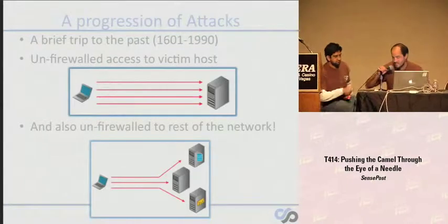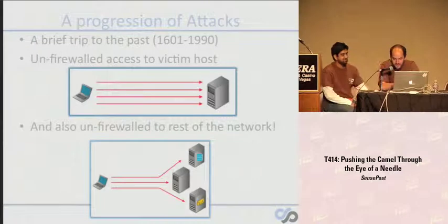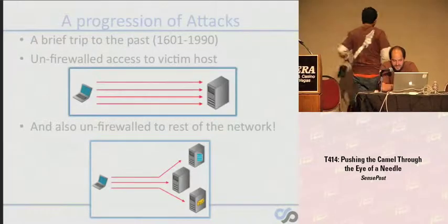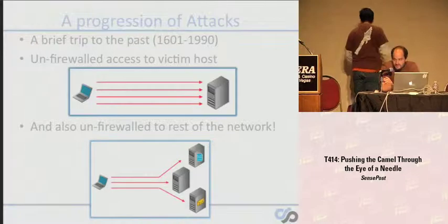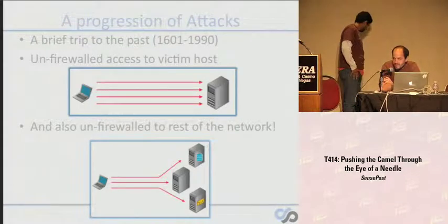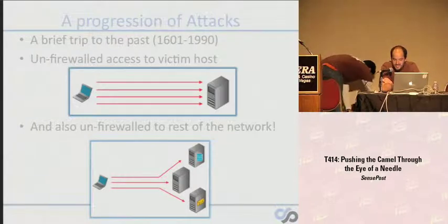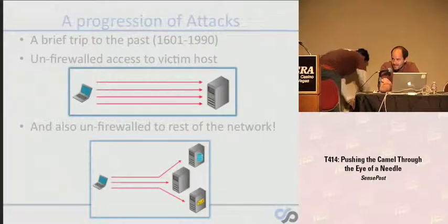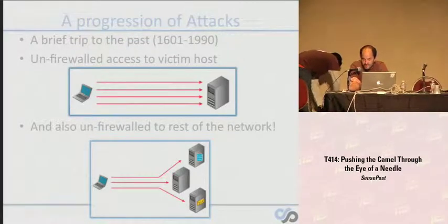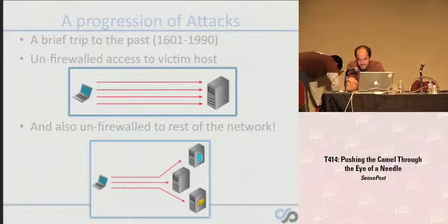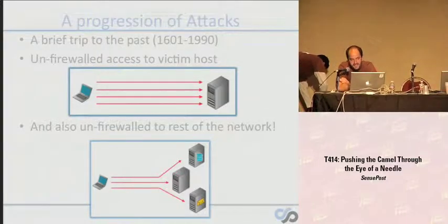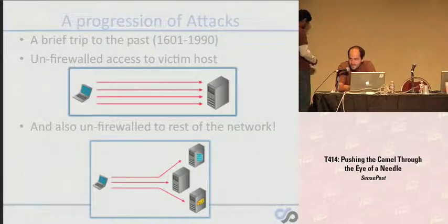We're going to do this chair-switching thing just because we're driving off one notebook, so give us three seconds in between. We'll start with a brief history of how you've traditionally got traffic into and out of target networks. In the pre-firewall days, most machines had publicly addressable IPs, or at least they were routable. We could send our traffic directly there, and that also gave us unfirewalled access to the rest of the network. Happy days.